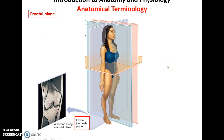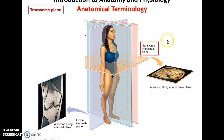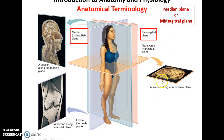Body planes can cut the body into slices. The frontal plane cuts the body into anterior and posterior regions. The transverse plane cuts the body into superior and inferior portions. The median plane, if going through the midline, is called the midsagittal plane and gives a right and left side of the structure; if it is off-center and not a balanced cut, it is called a parasagittal plane.